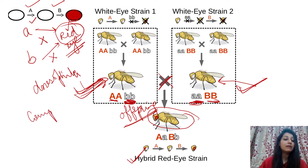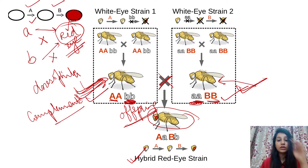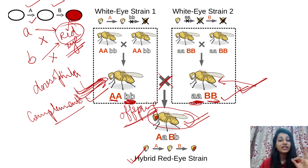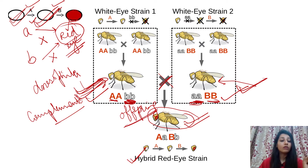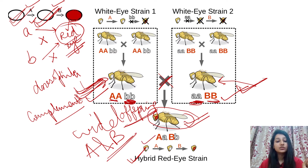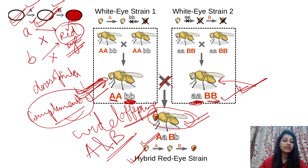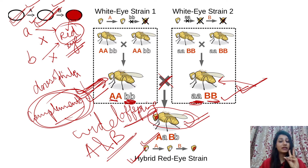In this condition, complementation has occurred between the two genes, that's why the offspring is red-eyed. Complementation will occur when a product is encoded by two genes — not one gene but two genes. Even if the parents are mutated, the offspring will be wild type, because A and B have complemented each other. This is what complementation is: even if the parents are mutated, the offspring will be wild type if the phenotype depends on two genes that complement each other.